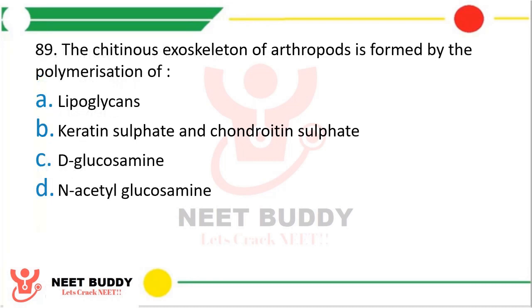Question number 89: The chitinous exoskeleton of arthropods is made of polymerization of — Option A: Lipoglycan, Option B: Keratin sulfate and chondroitin sulfate, Option C: D-glucosamine, or Option D: N-acetyl glucosamine. The correct answer is Option D, N-acetyl glucosamine. N-acetyl glucosamine polymerizes with each other to form the chitinous exoskeleton.